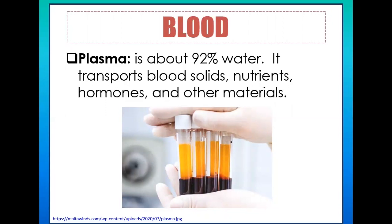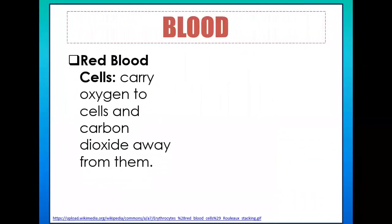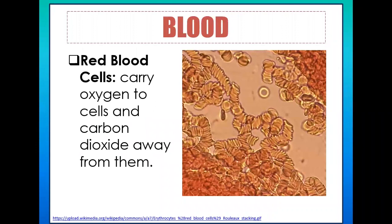The remaining 45% of blood consists of what we call formed elements or cell elements. Let's discuss red blood cells. The function of red blood cells is to carry oxygen to cells and carbon dioxide away from them. Another term for red blood cells is erythrocytes, spelled E-R-Y-T-H-R-O-C-Y-T-E-S. They carry oxygen to cells and remove carbon dioxide away from the cells.